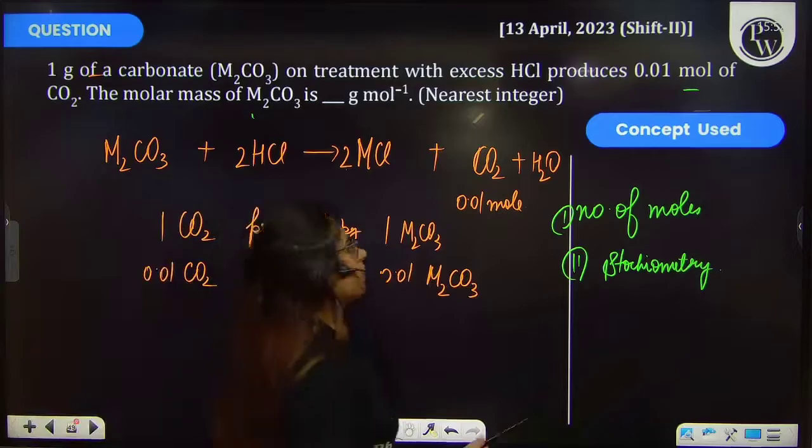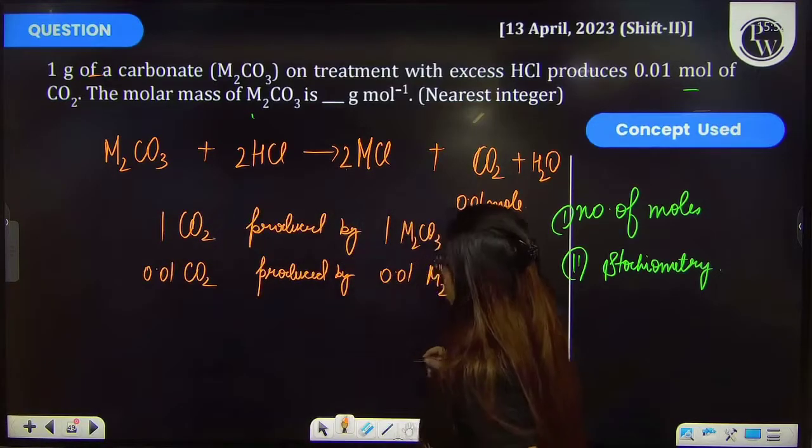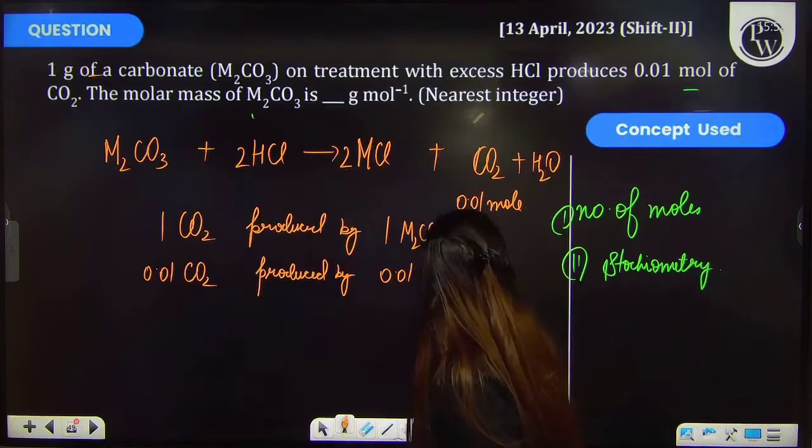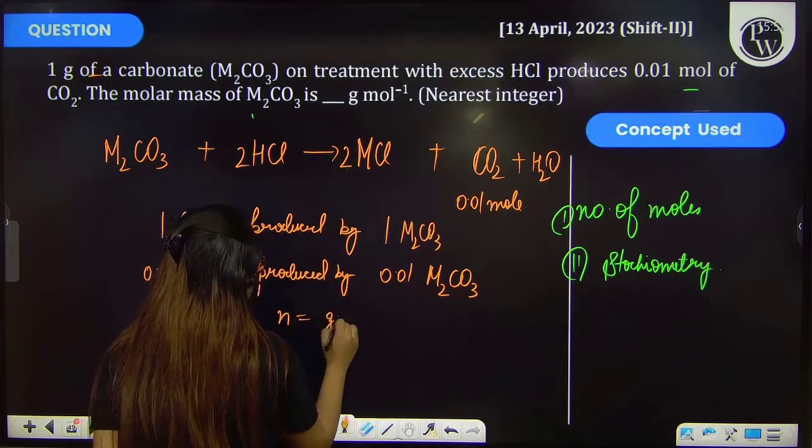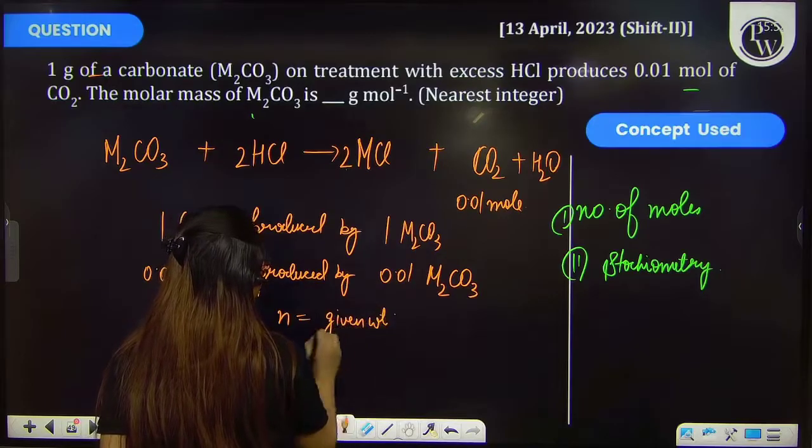So these are the number of moles. Now you have to calculate the molar mass. As we know that number of moles is equal to given weight upon molecular weight.